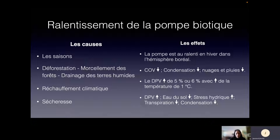Ce qui est intéressant, c'est de voir aussi les effets de la déforestation, le morcellement des terres et le drainage des terres humides. À l'échelle mondiale, ça s'exerce parce que c'est en lien direct avec une diminution des nuages et une augmentation du déficit de pression de vapeur. Je vais vous expliquer ces notions-là pour que vous compreniez bien, et aussi faire le lien avec le réchauffement climatique. À partir du moment où le déficit de pression de vapeur est élevé, ça occasionne des stress et ça amène des sécheresses.